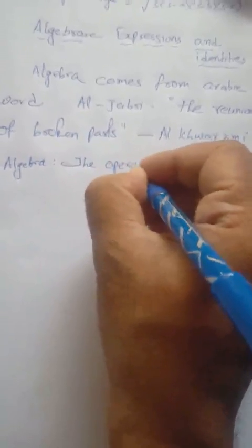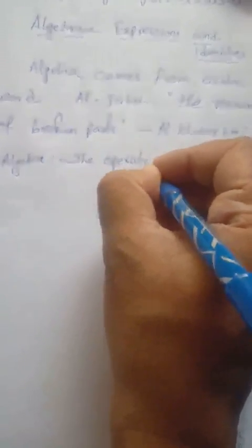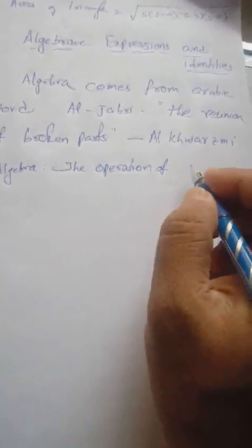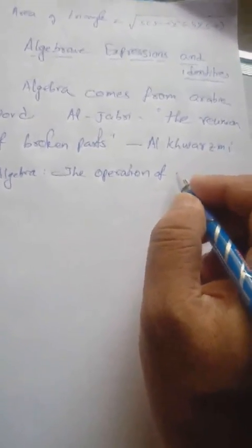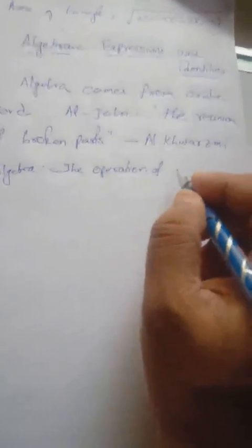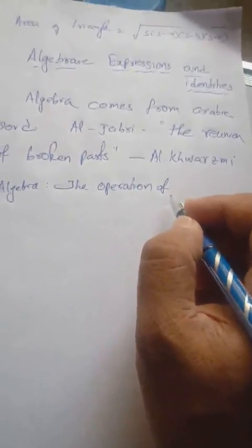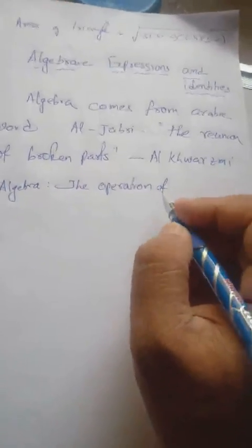Generally, from class one to fifth we learn about numerical operations like two plus three, two into three, or two divided by three. But in algebra, we learn about the operation of literals.